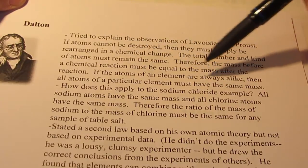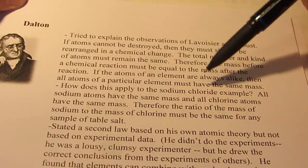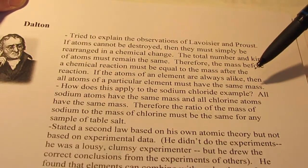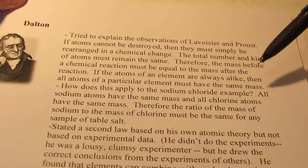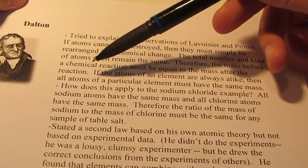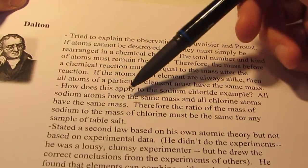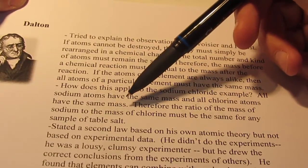If the atoms of an element are always alike, then all atoms of a particular element must have the exact same mass. So all atoms of lead, regardless of where you find them, are like all other atoms of lead. And the same is true of sulfur and any other element. So how does this apply to the sodium chloride example? Well, all sodium atoms have the same mass, and all chlorine atoms have the same mass.